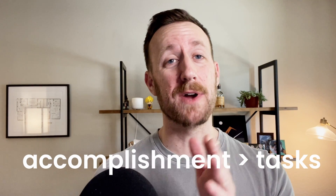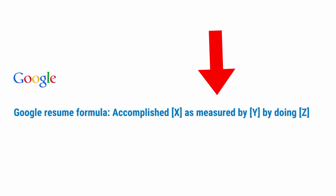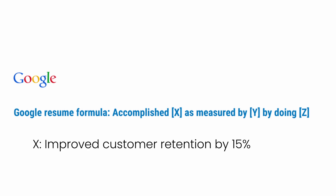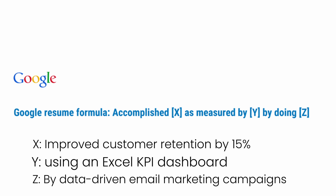With your about me section done, we can talk about work experience. Much of this section should replicate what you already have on your resume. A strong bullet point focuses on accomplishments rather than tasks — this means action words, metrics, and impact. The Google XYZ formula is great for this: accomplished X as measured by Y by doing Z. Here's an example a marketing analyst could use: 'Improved customer retention by 15% using an Excel KPI dashboard in data-driven email marketing campaigns.' Focus on impact. It's better to have a few strong bullet points than a whole list that just goes over day-to-day tasks without explaining the value you brought to the company.